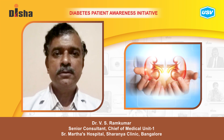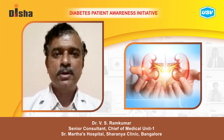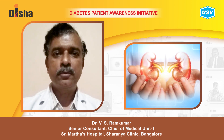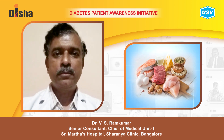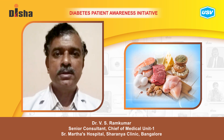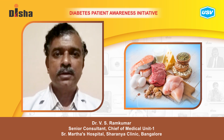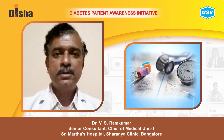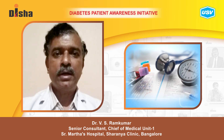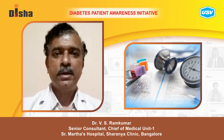Antihypertensives like ACE inhibitors and ARBs may be started, which are known to prevent further progression of kidney disease. Moreover, protein intake should be restricted, as proteinuria will worsen with excess protein intake. For this, the help of a dietitian or diabetes educator may be taken.